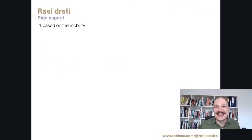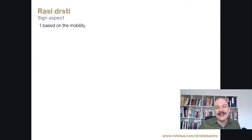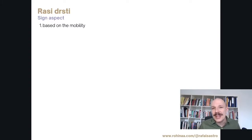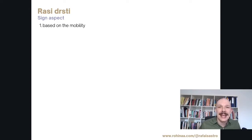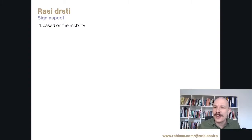The first point about Rasi Drishti, which is the sign aspect, is that they are based on the mobility of the signs. All 12 signs are divided into three groups based on their mobility. The first group is called Chara Rashi, or movable signs: Aries, Cancer, Libra, and Capricorn — or Mesha, Karka, Tula, and Makara in Sanskrit.